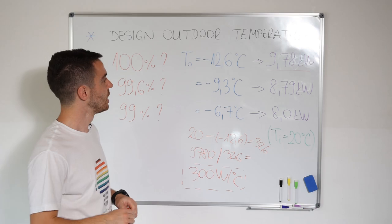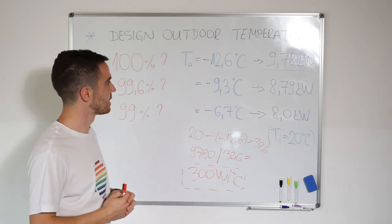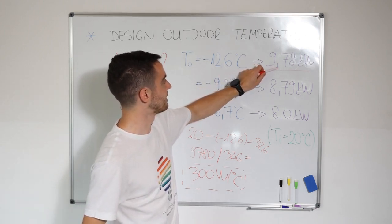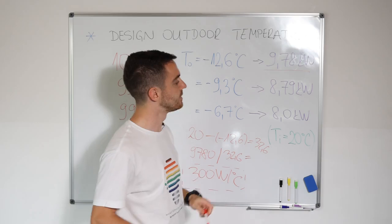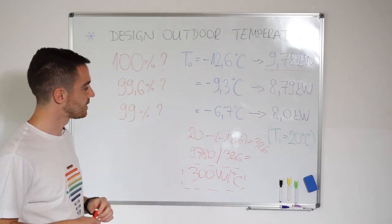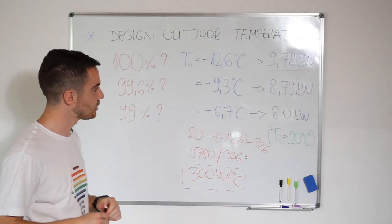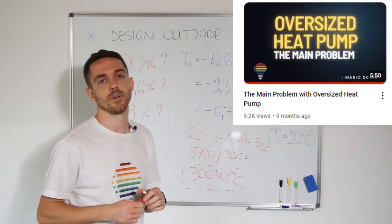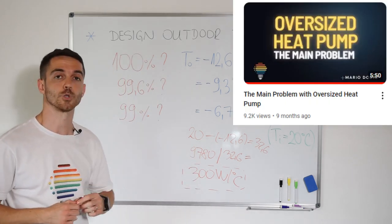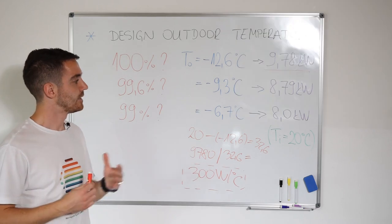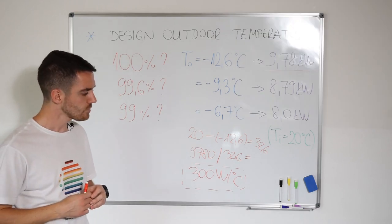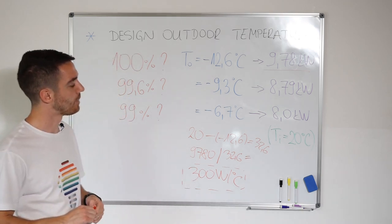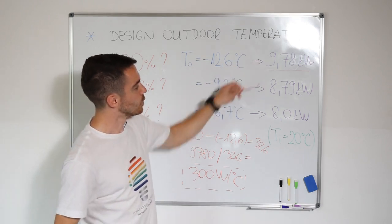So you need to choose, do you want to design your heating system at this temperature where you need 9.78 kilowatts, or at this temperature where you need 8 kilowatts? It will affect your heating system. It will affect which capacity you will choose. In one of my previous videos, I explained what is the main issue with oversizing. And we will also show in one of the next videos what will be minimum and maximum modulation of heat pumps. So this is for sure important.